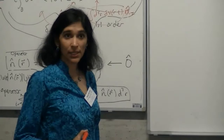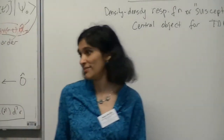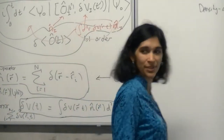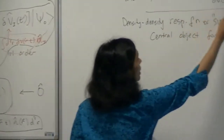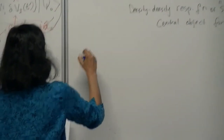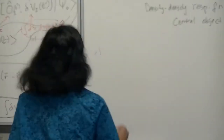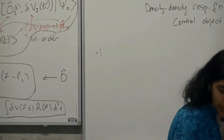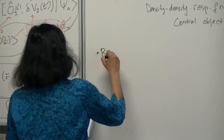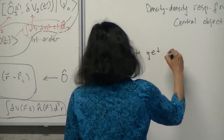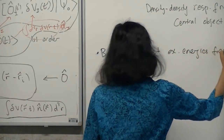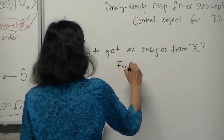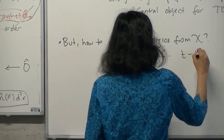Let's go back and ask ourselves: I said we were trying to get response — excitation energies — and this gives you the central object. But I don't see any energies here. Can anyone tell me how we're going to extract frequencies or energies from this kind of time-dependent function? If you're in quantum mechanics and you have some time-dependent function and you say, well, what are the frequencies involved — what do we do? Exactly — Fourier transform. That's what we want to do now.